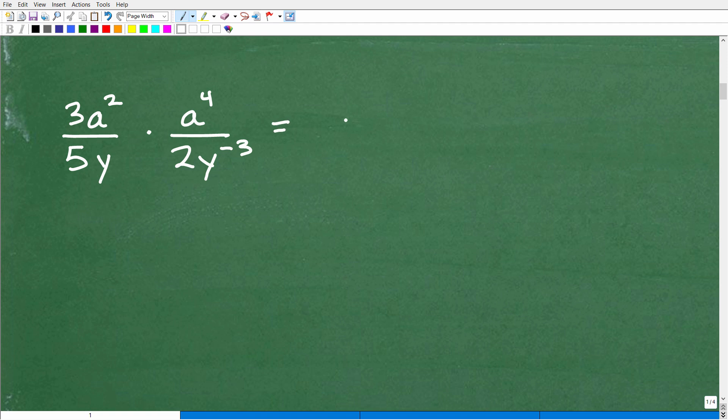Well, it's the same idea. Our numerator is going to be the product of all this stuff right here. So let's go ahead and do that right now. So that's going to be 3a² times a⁴. That's my numerator. And my denominator will be this stuff, 5y times 2y⁻³.